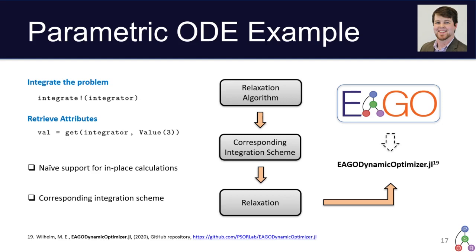We've chosen to associate each of the relaxation algorithms with an integration scheme. And this is because we want to be able to support relaxation approaches that don't necessarily rigorously account for truncation error. So we can associate a local integrator that has the same truncation error properties and avoid falsely fathoming things in global optimization via that approach.